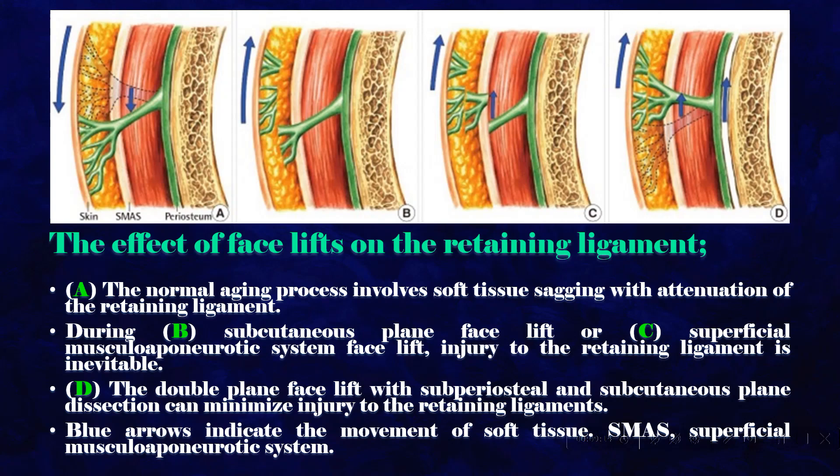The effect of facelifts on the retaining ligaments: the normal aging process involves soft tissue sagging with attenuation of the retaining ligament. During subcutaneous plane facelift or superficial musculoponeurotic system (SMAS) facelift, injury to the retaining ligament is inevitable. The double plane facelift with subperiosteal and subcutaneous plane dissection can minimize injury to the retaining ligaments.